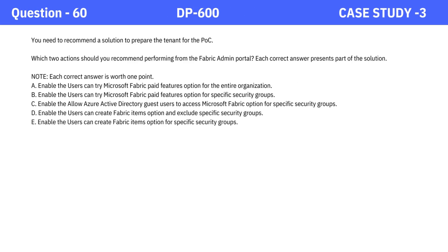Question 60: You need to recommend a solution to prepare the tenant for the POC. Which two actions should you recommend performing from the Fabric admin portal? Each correct answer presents part of the solution. Options: A — Enable the 'users can try Microsoft Fabric paid features' option for the entire organization. B — Enable the 'users can try Microsoft Fabric paid features' option for specific security groups. C — Enable the 'allow Azure Active Directory guest users to access Microsoft Fabric' option for specific security groups. D — Enable the 'users can create Fabric items' option and exclude specific security groups. E — Enable the 'users can create Fabric items' option for specific security groups. Pause the video, think about the answer, and let's discuss. The correct options are B and E.